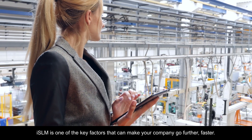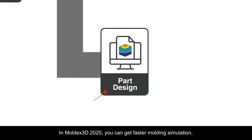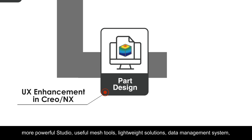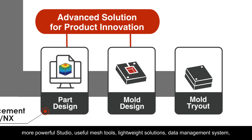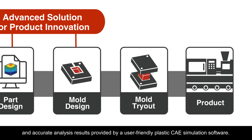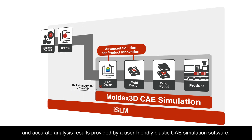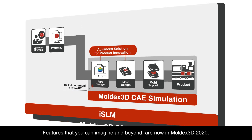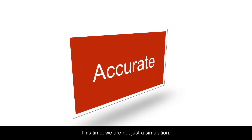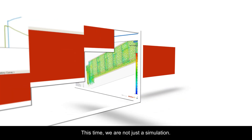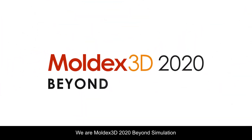iSLM is one of the key factors that can make your company go further, faster. In Moldex 3D 2020, you can get faster molding simulation, more powerful Studio, useful mesh tools, lightweight solutions, a data management system, and accurate analysis results — all provided by a user-friendly plastic CAE simulation software. Features that you can imagine and beyond are now in Moldex 3D 2020. We are not just a simulation — we are Moldex 3D 2020: beyond simulation.